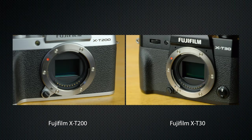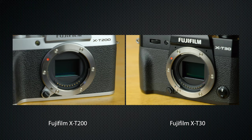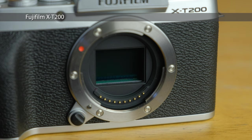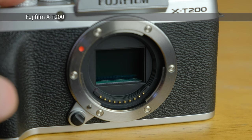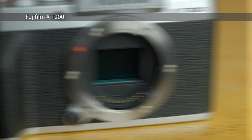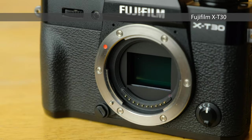Let's have a look and listen to the shutter. Both have a focal plane shutter and both support both a mechanical and fully silent electronic release. This is mechanical at one second on the X-T200 and the X-T30.